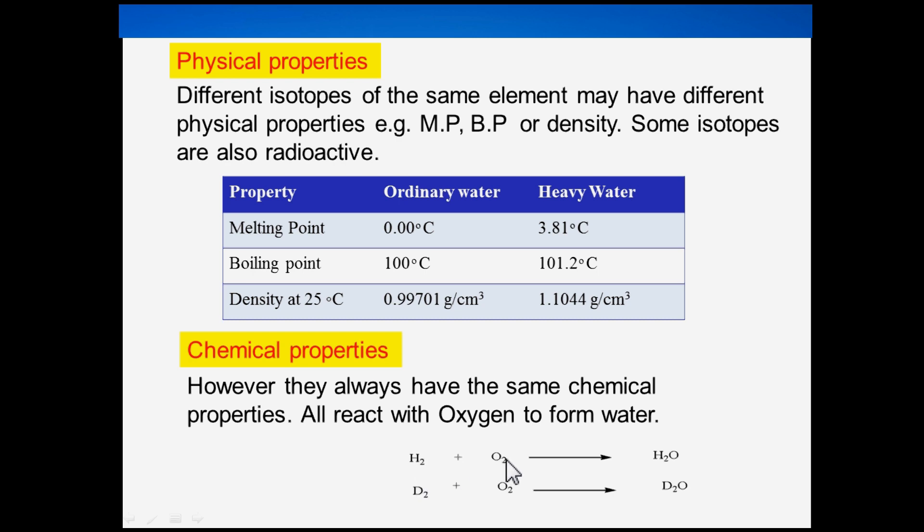All isotopes of hydrogen react with oxygen to form hydrogen oxide. Hydrogen reacts with oxygen to form ordinary water, and deuterium reacts with oxygen to form heavy water. Both have the same chemical equation and mechanism.